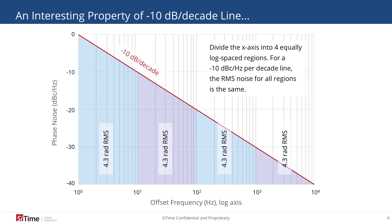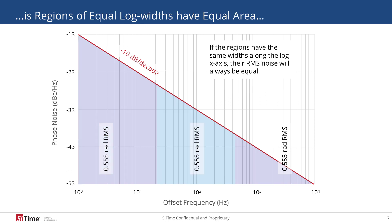To build this intuition we'll use a minus 10 dB per decade line. What's interesting about this line is that equally log-spaced regions below it have the same integration value — here shown as 4.3 radians rms. If we change the log spacing to something arbitrary, we still have the same value underneath each equally log-spaced region even though the value has changed. The important thing is that it is the same value for each equally spaced log region.